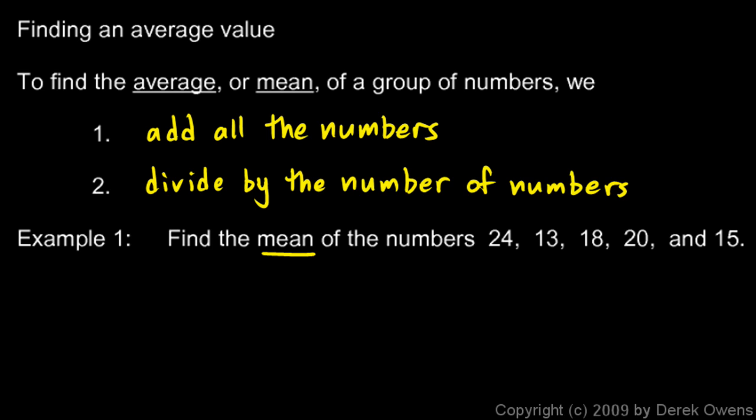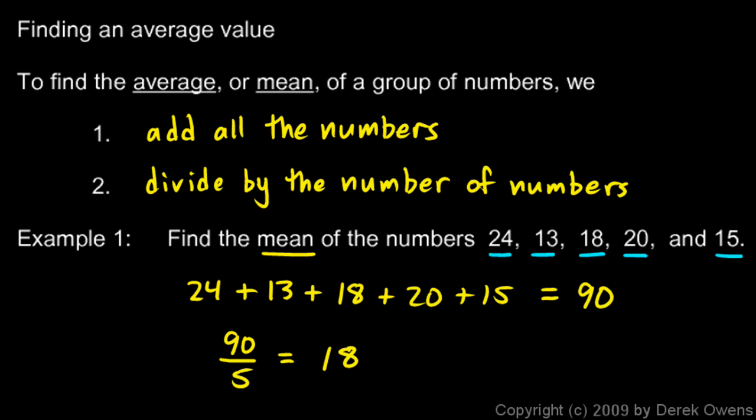We have to add these numbers up: 24 plus 13 plus 18 plus 20 plus 15. Those add up to 90. The average or the mean is going to be 90 divided by the number of numbers. You can see there's one, two, three, four, five, so the average is 90 divided by 5, and that works out to 18. 18 is the mean or the average of those numbers.